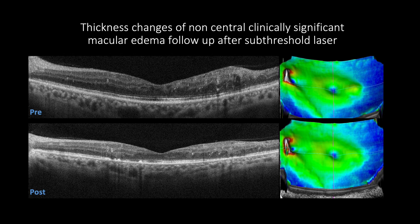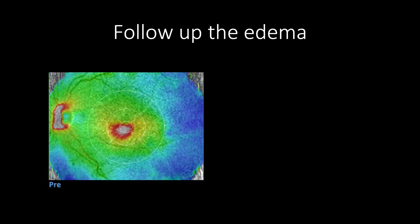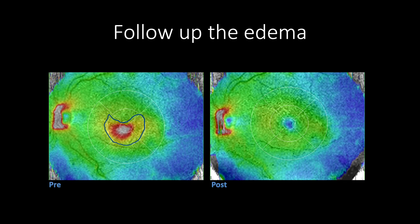Topography may help to follow up changes in subfields post-treatment in patients with non-central clinically significant macular edema, as topography will take the mean subfields changes in the edematous area. However, tomography may show not only thickness changes but structural changes as well. When the edema is centrally located, the topography can play a role in studying and demonstrating the efficacy of the treatment in a color-coded manner. As shown in this example, the patient has increased thickness of the central and inner subfields due to central diabetic macular edema, and post-treatment the topography shows resolution of the edema and improvement of macular thickness in the central and inner subfields.